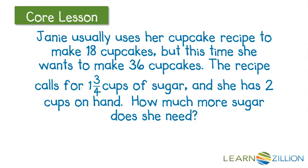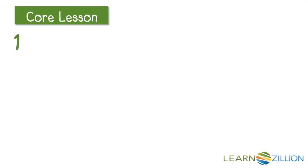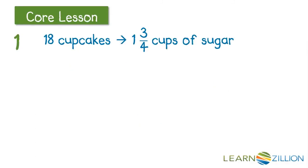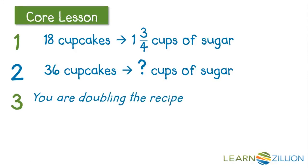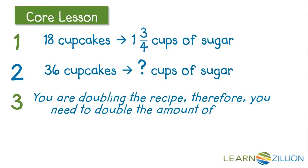We're going to make 18 cupcakes, and 18 cupcakes usually uses 1 and 3/4 cups of sugar. Now she wants to make 36 cupcakes and she only has 2 cups of sugar on hand. 18 cupcakes requires 1 and 3/4 cups of sugar, but for 36 cupcakes we're not quite sure how much sugar that's going to need. If we realize that we're doubling the original recipe to make 36 cupcakes, that must mean that we're going to double the amount of sugar.